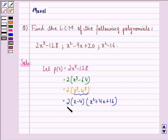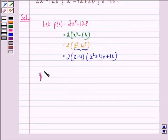So this is equal to P(x), that is the polynomial P(x). Now, let the second polynomial be Q(x), that is x squared minus 9x plus 20.